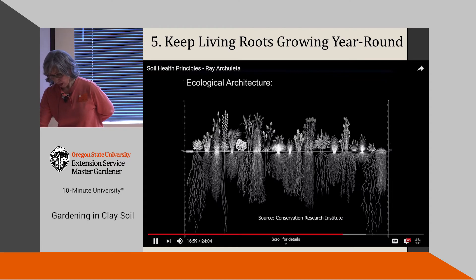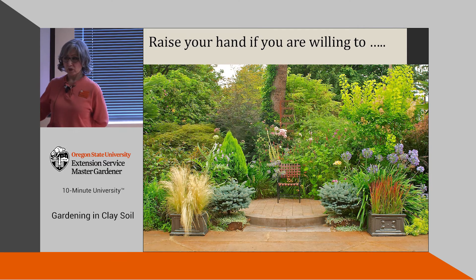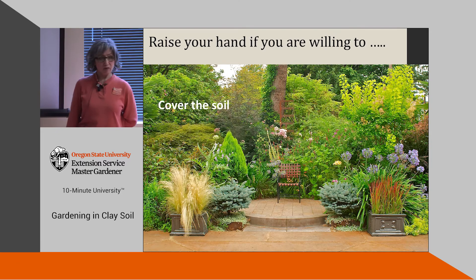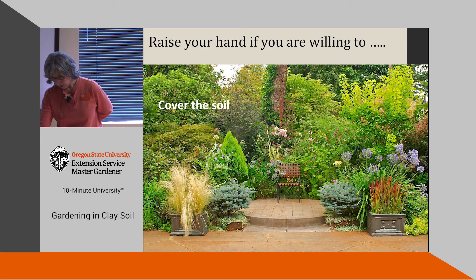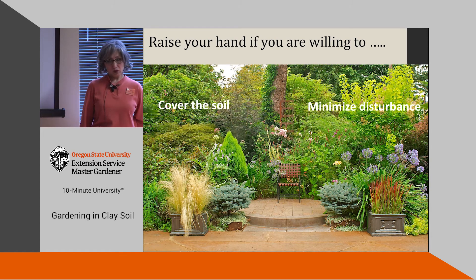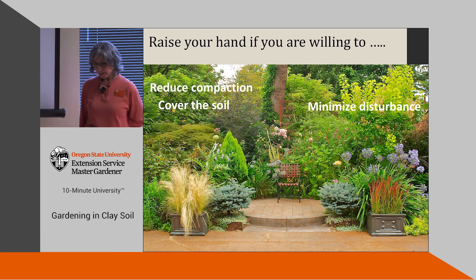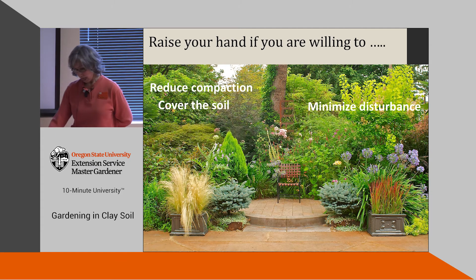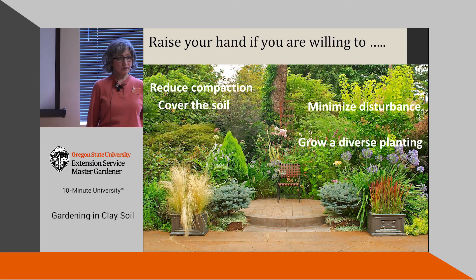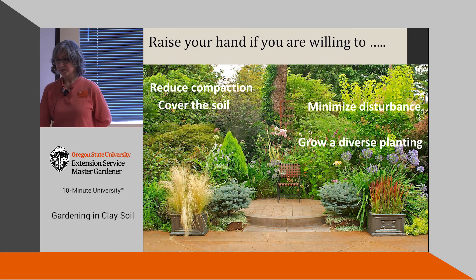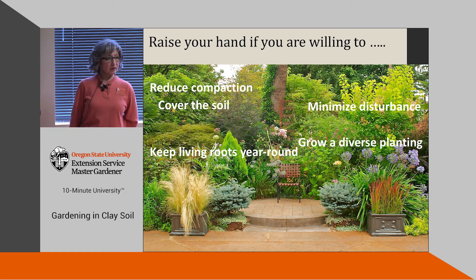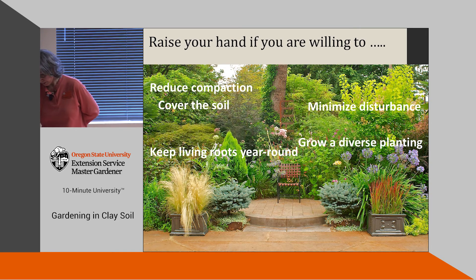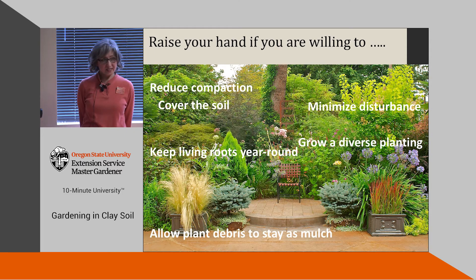As gardeners, how can we put these five principles to work? I'd like you to raise your hand if you're willing to cover the soil... minimize disturbance from digging and tilling... reduce compaction... grow a diverse planting — there's a reason to go to the nursery! Keep living roots year round: if you grow vegetables, grow something in the off season; if you grow a perennial mixed border, you already have living roots year round. The hard one: allow plant debris to stay as mulch so you're not removing all the organic content from your garden.